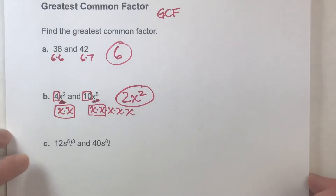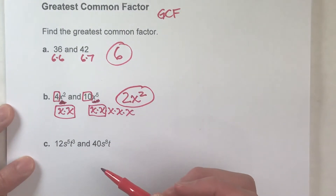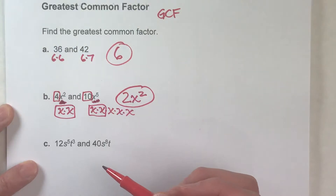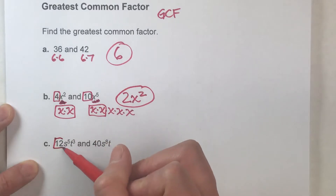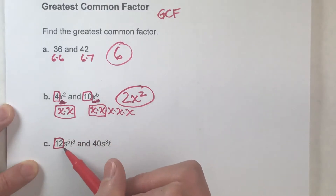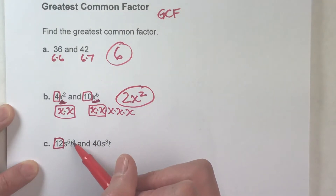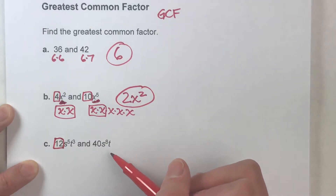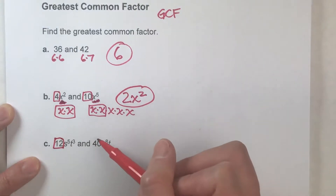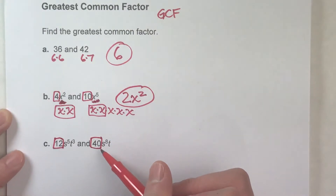Let's do another one that's a little harder because there are two variable parts. Our process is going to be the same — break it up into pieces. We've got 12s to the 5th times t to the 3rd, and 40s to the 8th times t. Let's start with the regular numbers, 12 and 40.